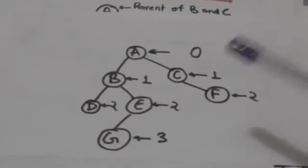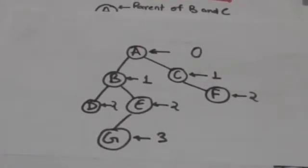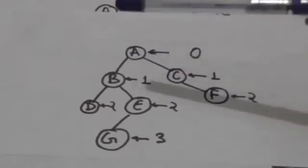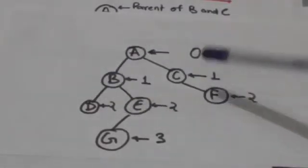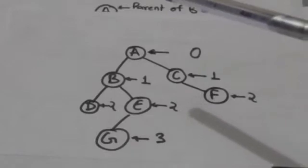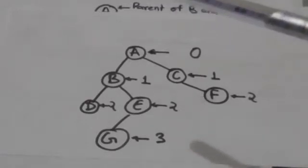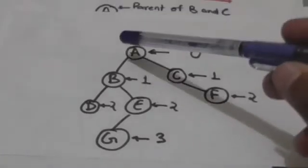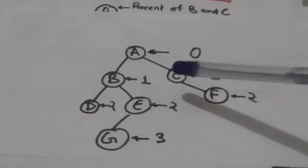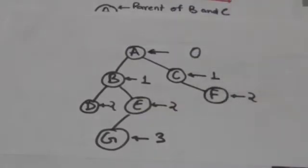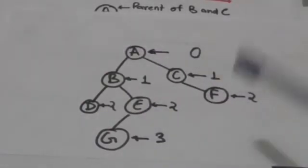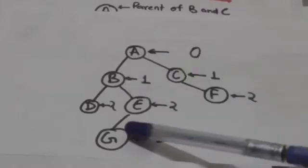Now consider this binary tree. Here node A is root, so its level number is 0. Node B and C are children of node A, so their level number will be 1 more than the level number of node A. Here level number of nodes B and C is 1. Similarly, level number of nodes D, E and F is 2, and level number of node G is 3.